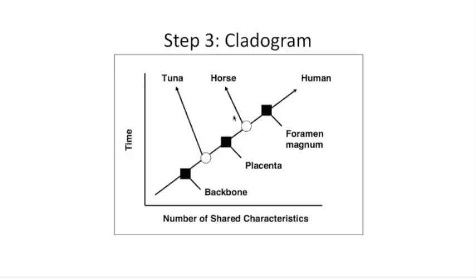Continuing up, the horse's clade comes next. The last characteristic is the foramen magnum — the hole in your skull through which your spinal cord enters your brain. Since it comes after both the horse and tuna branches, the human is the only organism with a foramen magnum. The number of shared characteristics increases as you move across the cladogram: one shared characteristic at the base, then two, then three.